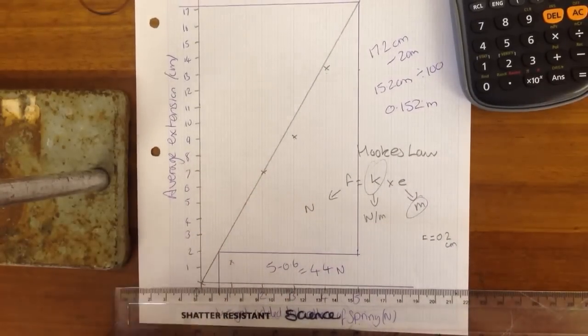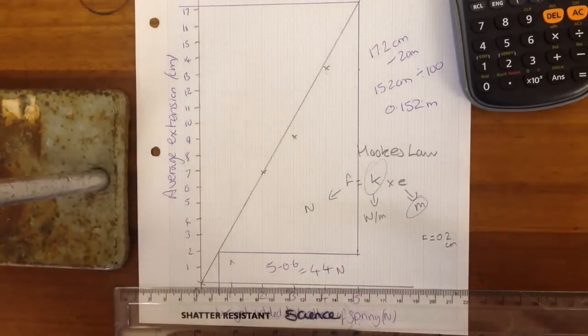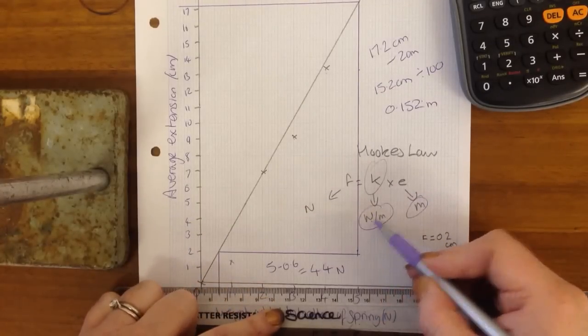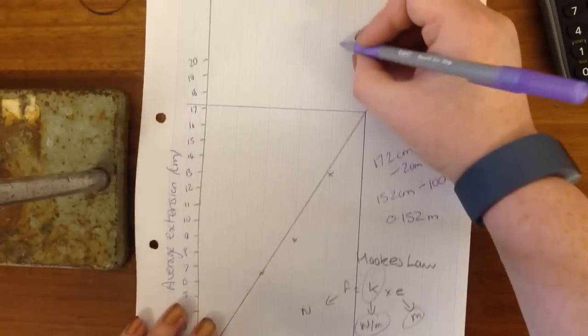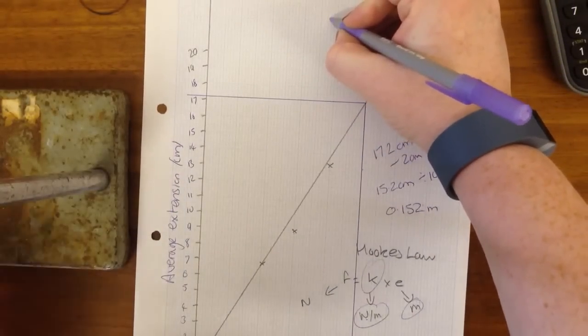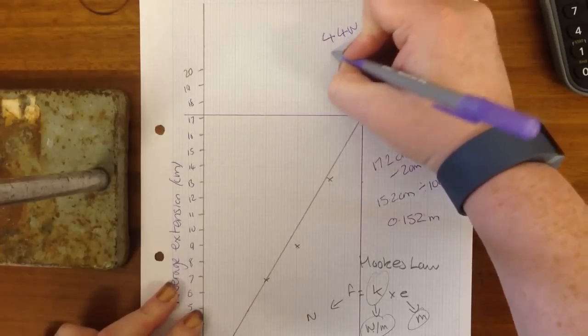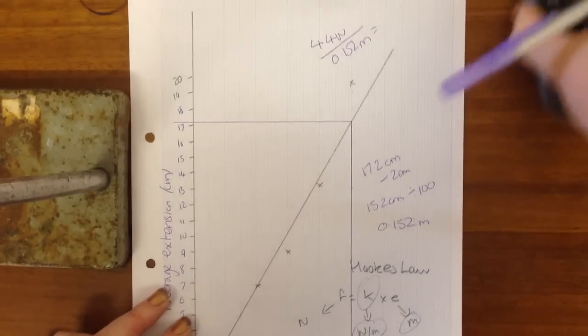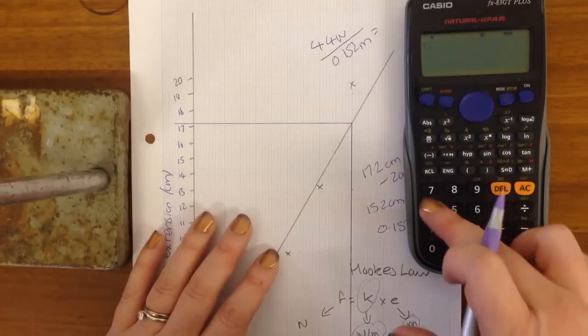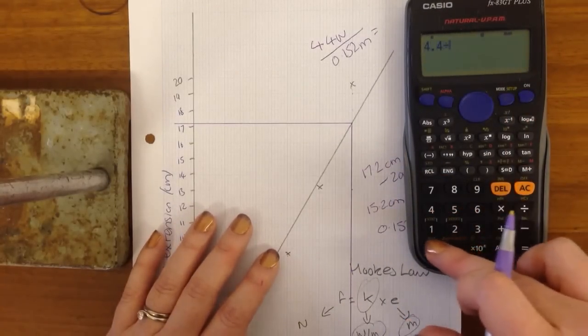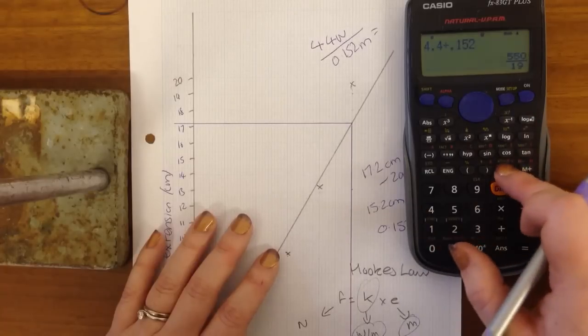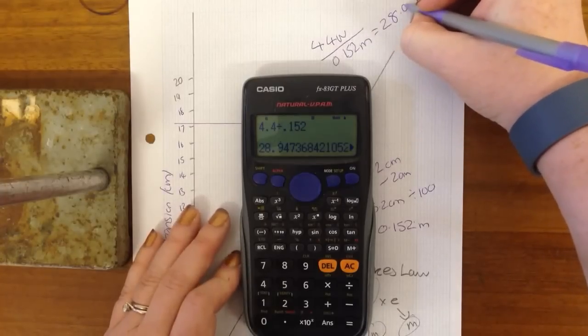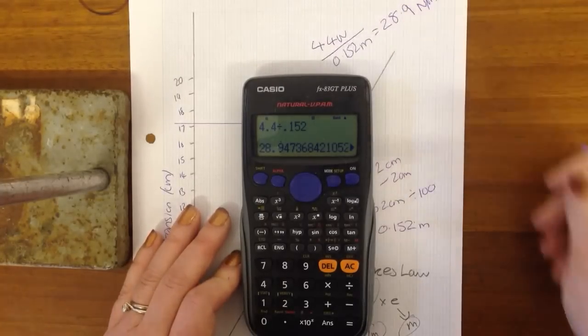Now, if you can't remember which way round to do your divisions, always look at the unit. So this one's newtons per meter. So that means we put our newtons on top. Our newtons were 4.4 newtons divided by 0.152 meters. So the spring constant for this spring is 4.4 divided by 0.152. And that equals 28.9 newtons per meter. Thank you.